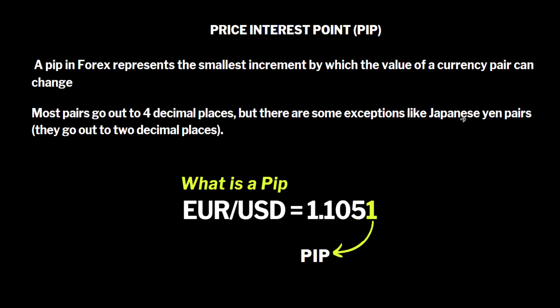Coming back to our slides: what exactly is a pip? A pip simply means Price Interest Point, and it is the smallest increment by which the value of a currency pair can change. Most pairs go out to four decimal places. When we talk about pairs in the forex market, we're saying you can only trade in pairs — if you have euro you can exchange it for dollar, and vice versa. You cannot trade just one currency.